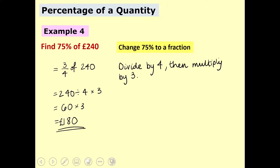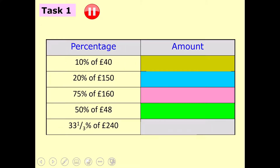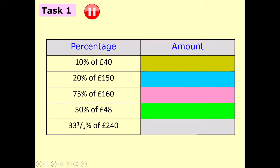Pause the video here and try these 5 questions using the table of percentage values to help you. Okay, let's go through the answers. First one: 10% of £40. Change 10% to a fraction — it's a tenth — then find a tenth of 40 by dividing by 10. You should have £4.